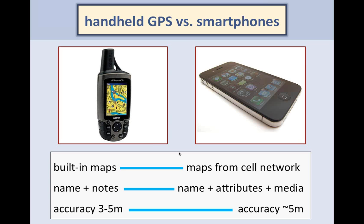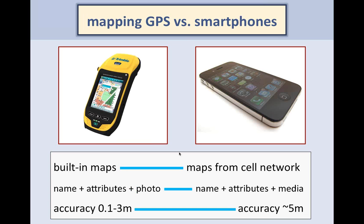The accuracy of smartphones and handheld GPS units is roughly equivalent. When you step up to mapping-quality GPS units, the attributes and photos you can collect get closer to what smartphones can do — so smartphones are much closer to mapping-quality GPS than to handheld-class GPS in terms of data collection. However, mapping GPS units still have, by far, better accuracy depending on how much money you want to pay. So data collection-wise they're kind of in the same group as mapping GPS, but for accuracy they're closer to handheld GPS.